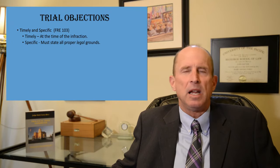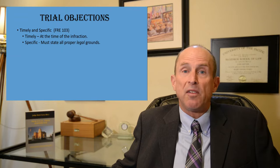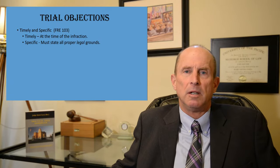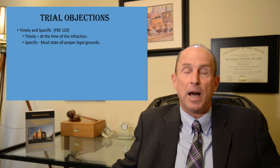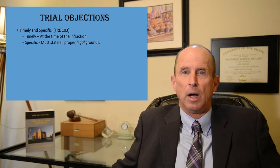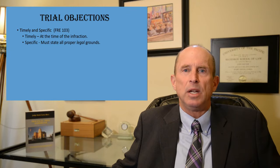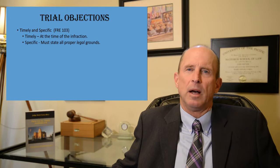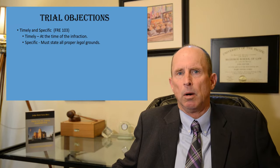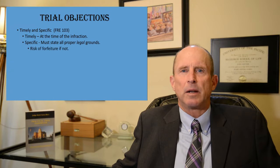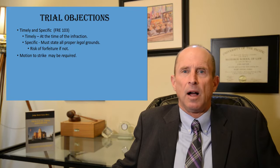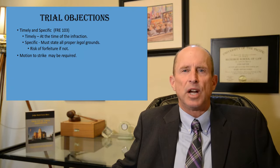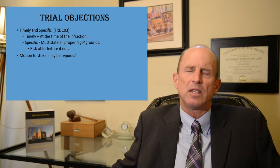Commonly, attorneys will say 'objection, your honor' without giving any ground. Judges who are sticklers on the evidence code may simply say overruled, mainly because you didn't state a reason — it might have been a good reason to object that the judge might have sustained, but you didn't give a specific response. Also, if the judge grants your objection but the witness has already answered, many jurisdictions require you to also make a motion to strike. So you would say: 'Objection, your honor, hearsay — move to strike the answer.'